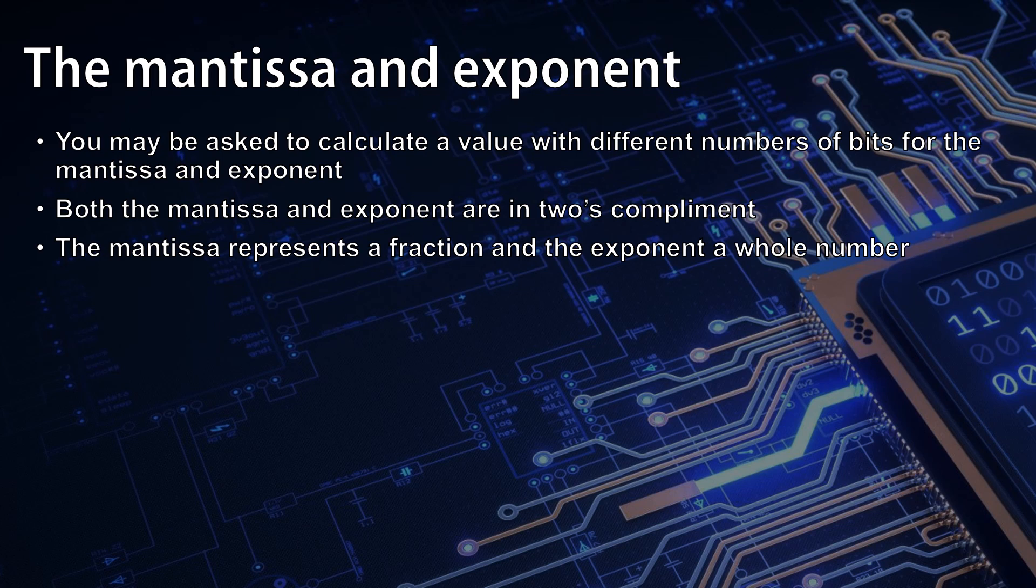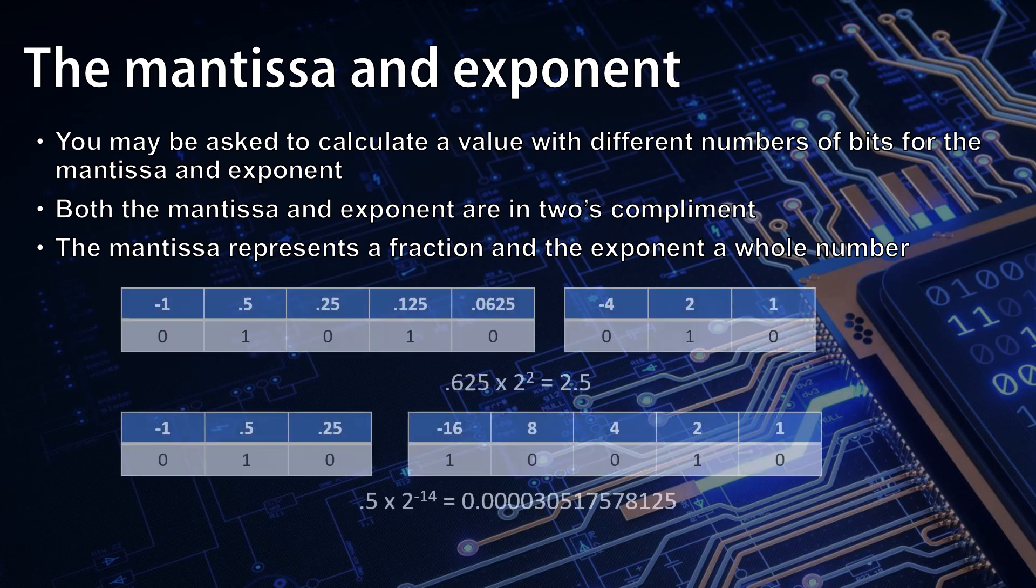If we take a look at these examples we can see that for the mantissa it always starts with minus one and then ignoring the sign it halves as we move right. For the exponent it's easiest to start in the rightmost column with a one and it doubles as we move left, remembering of course that the most significant bit needs to be negative.